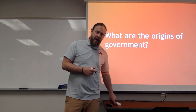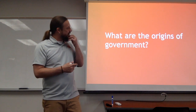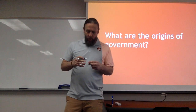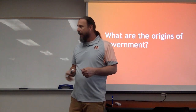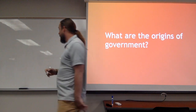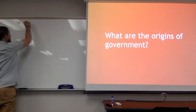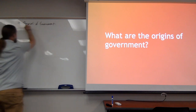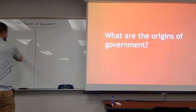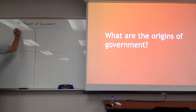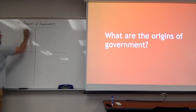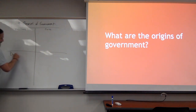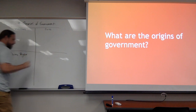We're talking about the four origins of government. The question is: what are the origins of government? You could also say, how do governments get started? Why do governments get started? On your paper, simply label it the four theories of government — just create four boxes. Label one of them evolutionary, force, divine right, and social contract.